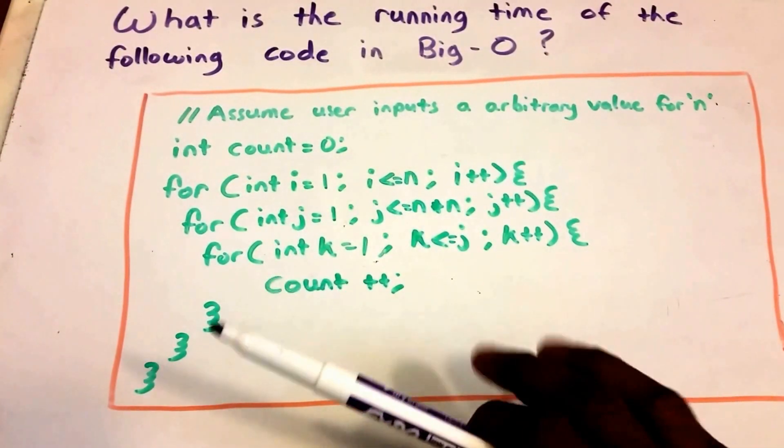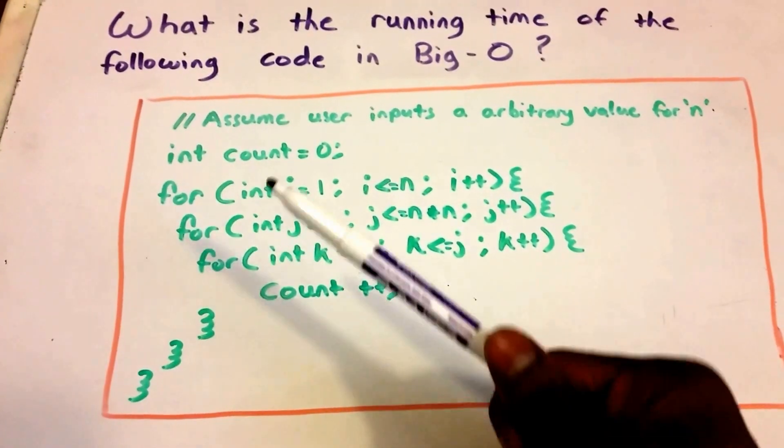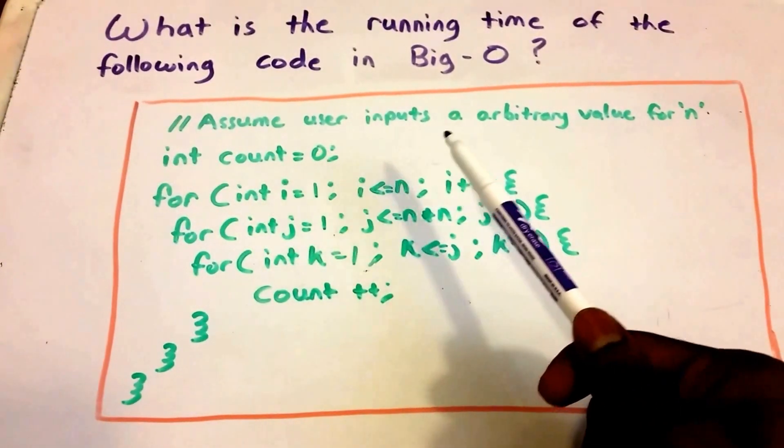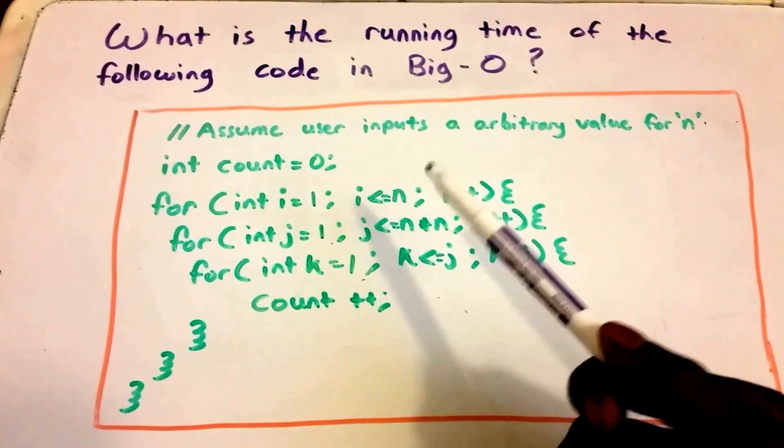I have the code in the orange rectangle here, written in green. We assume that the user's input is some arbitrary value for n, so it could be 5, 10, or 15.